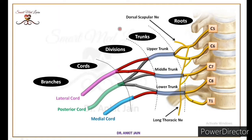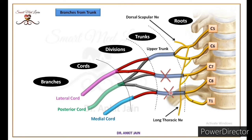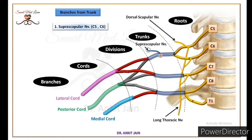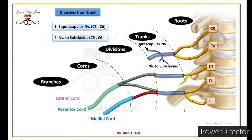Now we discuss the branches from the trunk. Middle trunk and lower trunk se koi bhi branch nahi nikalti hai. But upper trunk se do branches arise hoti hai: first is suprascapular nerve, and second one is the nerve to subclavius. As we know, upper trunk is formed by the union of C5 and C6 roots. That means upper trunk receives signals from the C5 and C6 roots. Isliye in dono nerves ki root value bhi C5 and C6 hogi.